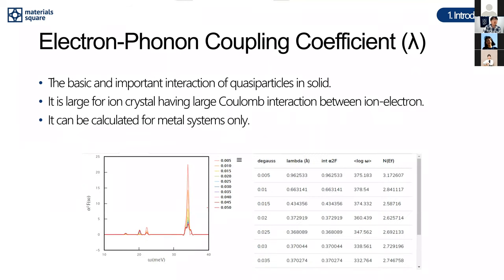If you are interested in the lambda coefficient calculation, Materials Square provides the Eliashberg spectral function alpha-squared-F as a function of frequency, which can be plotted in post-processing. You can also retrieve specific numerical values such as lambda, alpha-squared-F, or the Fermi-level density of states as text output.